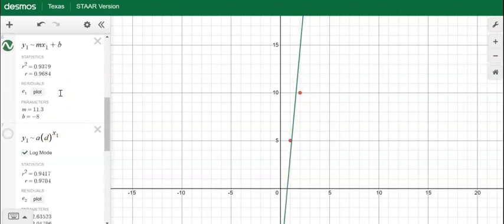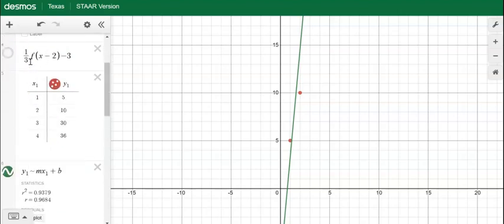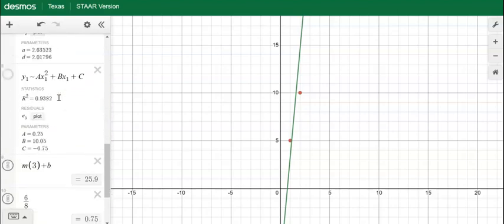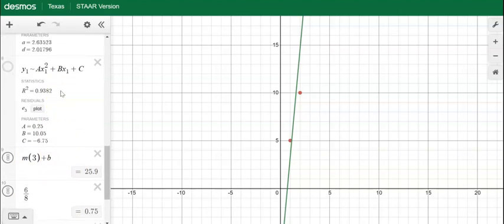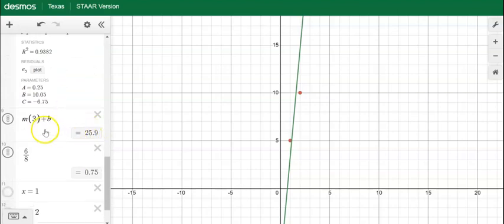Now let's say we want to predict a value. So using a linear regression for this data, they would want to predict when x = 3, for example. Well, what you could do is type in the m, instead of x we're going to put (3) and then plus b, and that gives you this.